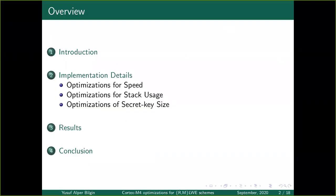This presentation consists of four main sections: introduction, implementation details, results, and conclusion. In the introduction, I will briefly talk about the NIST post-quantum standardization process, our target algorithms, and our target platform. In implementation details, I will explain our optimization techniques, which can be categorized as optimizations for speed, optimizations for stack usage, and optimizations for secret key size. Then I will share our results and conclude.